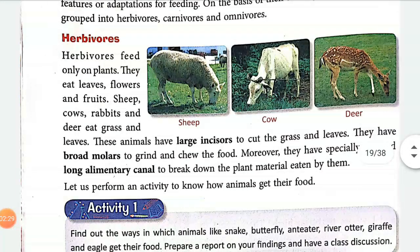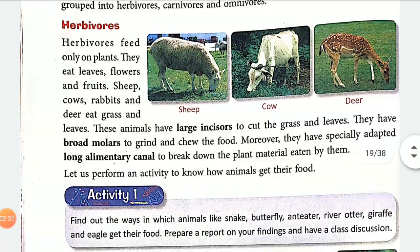Herbivores feed only on plants. They eat leaves, flowers, and fruits — all parts of plants. For example, sheep, cow, rabbit, and deer are all animals which eat plant parts such as grass and leaves.